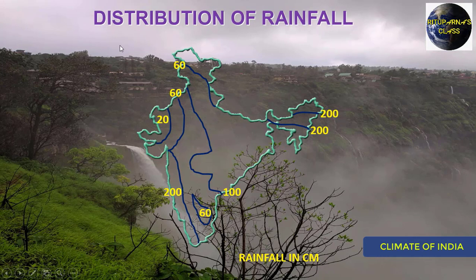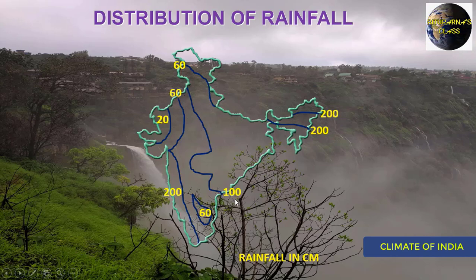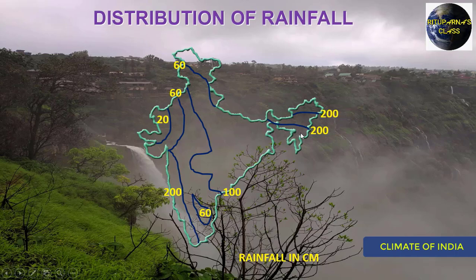Now we are going to discuss the distribution of rainfall through isohyets. Isohyets join places having the same amount of rainfall. In the extreme north-western portion of India, they receive approximately 20 centimetres. In the north-western portion, the rainfall is 60 centimetres. The central Maharashtra and Karnataka region also receive 60 centimetres. In the central portion of India, rainfall is 100 centimetres. The Ladakh region receives 60 centimetres, but the western coastal plain and the north-eastern states receive 200 centimetres.